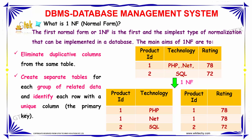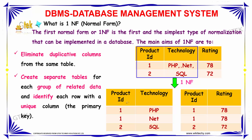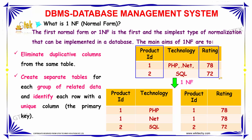Here, the table is having a similar product ID, so we are separating it into separate tables with corresponding columns. Product ID and technology are grouped into one table, and product ID and rating are grouped into another table. This avoids redundancy.